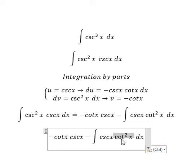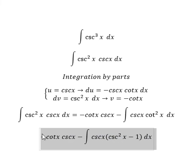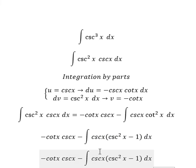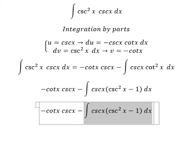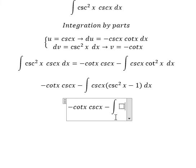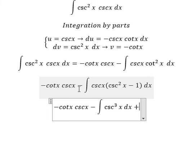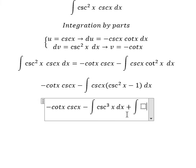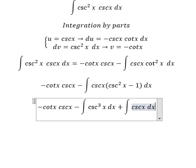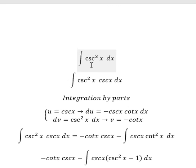Cotangent squared, which we change for cosecant squared x minus one. And now we need to expand this, so we have the integration cosecant x to the power of 3 dx, plus because we have negative with negative, we have positive, the integration of cosecant x dx equals to, and we know that this one equals to this one.